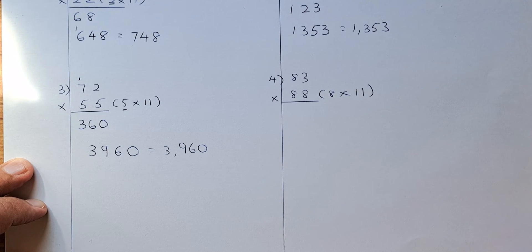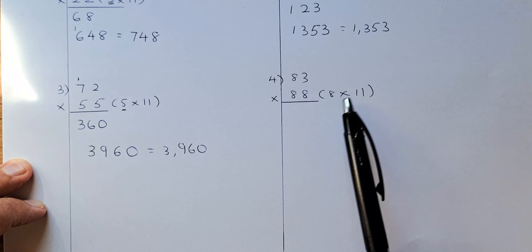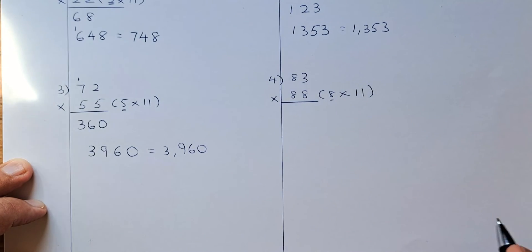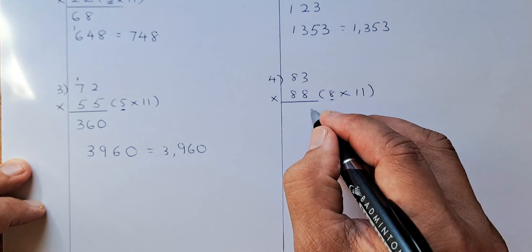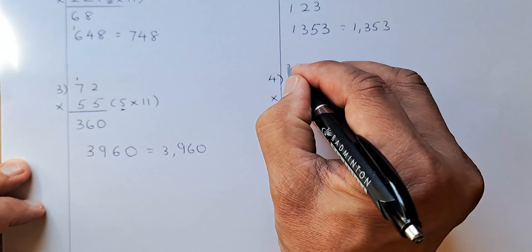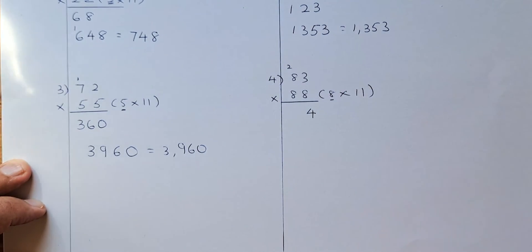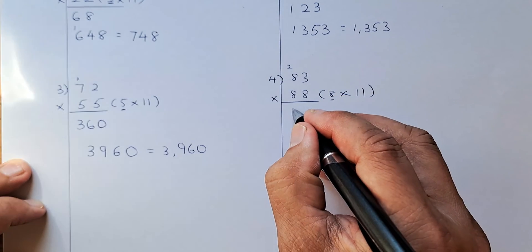And last but not least, we are going to do 83 by 88. So 88 is made up of 8 times 11. So first you multiply 83 by 8. So 3 times 8 is 24. 4 carry up 2. And then 8 times 8 is 64. 64 plus 2 is 66.